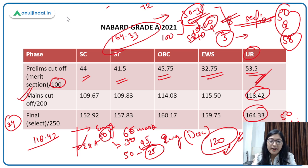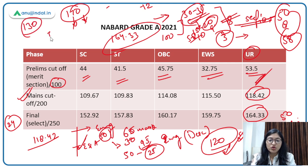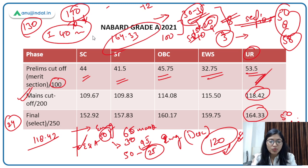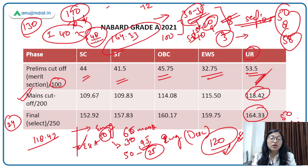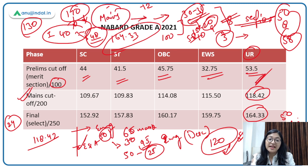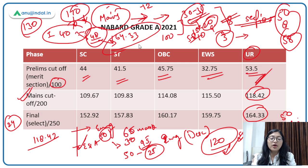So if you look at next year's final cutoff, you have to strategize your mains performance and aim to get at least 130. In the interview, almost everyone got around 40 out of 50 on average, and the highest mark was 48. Since the interview is very dicey, you should focus on maximising your marks in the mains. You cannot take chances in the interview, so give more priority to mains preparation.